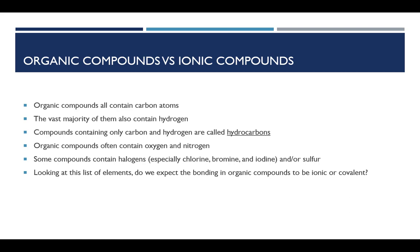Now go back and look at the list of all the elements on this page: carbon, hydrogen, oxygen, nitrogen, halogens, and sulfur. Now do we expect the bonding in organic compounds to be ionic or covalent? Let's think about this for a second. All of those elements have what in common? They are all nonmetals. And as we've already seen, nonmetals tend to bond with one another using covalent bonds. So we expect the predominant form of bonding to be covalent in organic compounds.